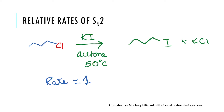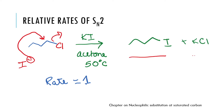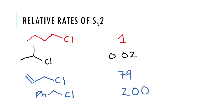The temperature is maintained at 50 degrees centigrade. Potassium iodide is a source of I minus, so I minus would attack and kick out chloride. The product that you would get is the iodide and KCl. We measure the rate of the reaction and call this the relative rate, assigning it to be 1. Now, with respect to this rate, we can do a systematic study about what happens if I change the group present next to the carbon-chlorine bond.